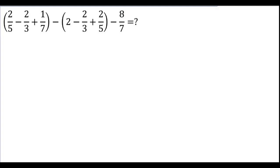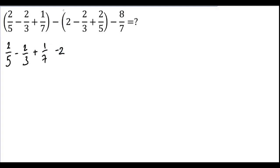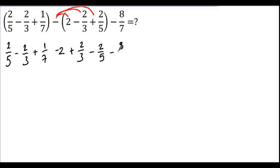This is another question of the same kind. Please pause the video and try to solve it, then check your answer. We have minus 2 over 3 inside the bracket. If I distribute the minus, minus times minus gives plus 2 over 3. So distributing the minus makes things easier. Writing it out: 2 over 5 minus 2 over 3 plus 1 over 7 minus 2, then distributing: minus times minus gives plus 2 over 3, minus times plus gives minus 2 over 5, and we also get minus 8 over 7.